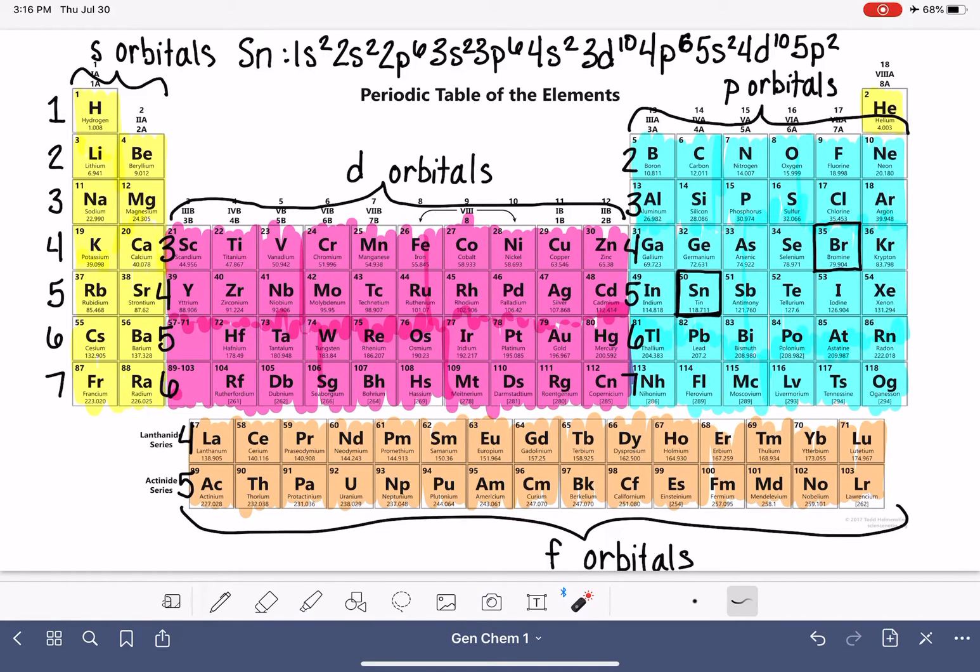And the concept of the noble gas abbreviation is really the same idea. Instead, what we do is take any one of these noble gases, you could literally use any one of them you want, and we write that into the electron configuration as a way of shortcutting or abbreviating a whole block of elements.